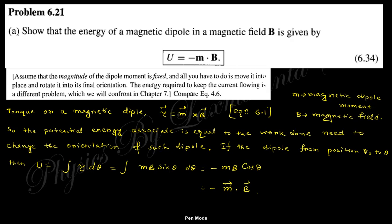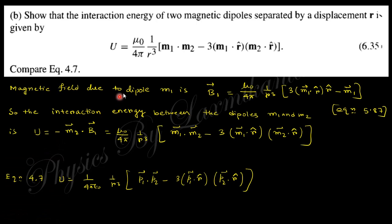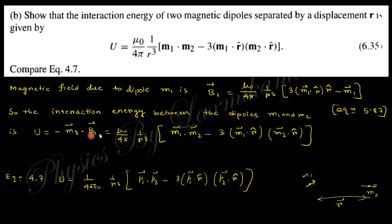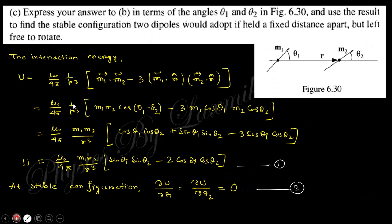Next, show that the interaction energy of two magnetic dipoles separated by distance R is given by this expression. For dipoles M1 and M2 separated at distance R, the interaction energy is U = −M2·B1. Here B1 is from equation 5.87 — substituting this value of B1 and taking the dot product with M2 gives the result, which is identical in form to the electrical dipole interaction energy.